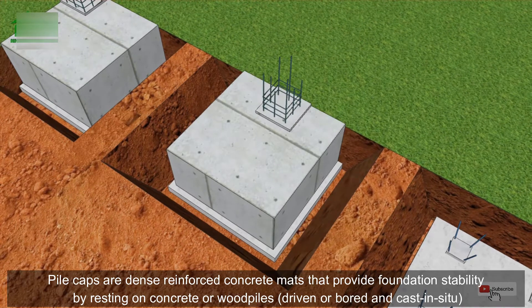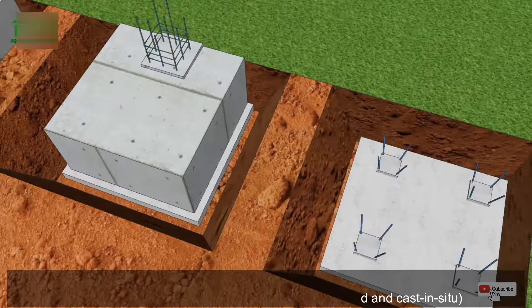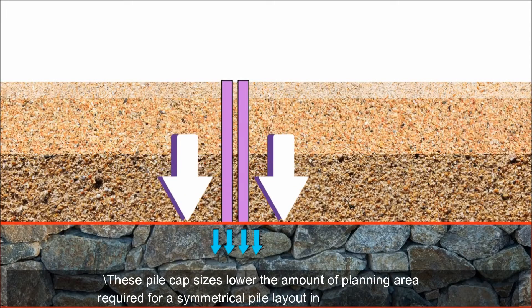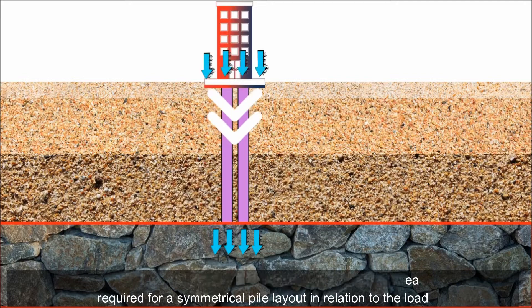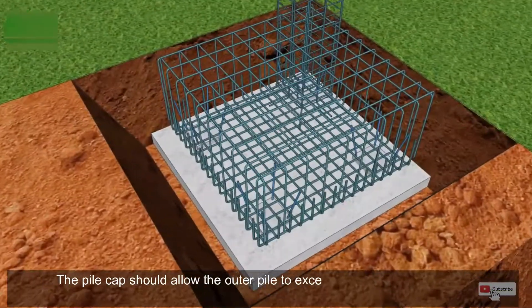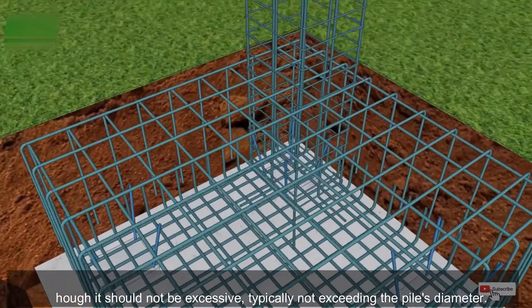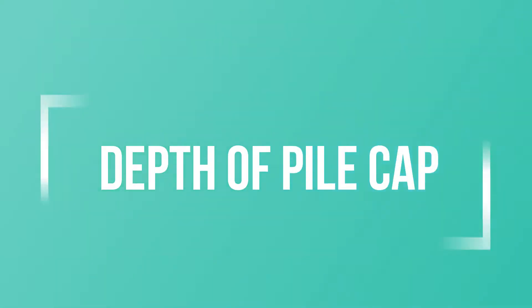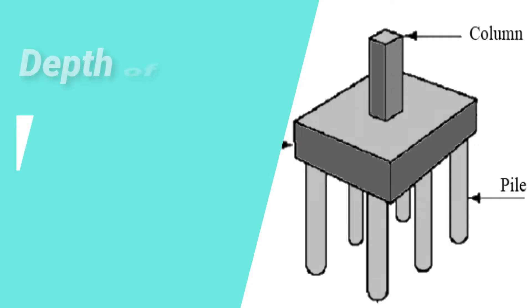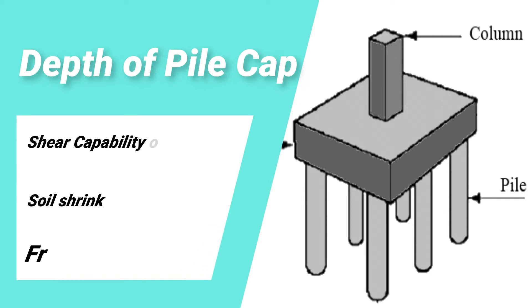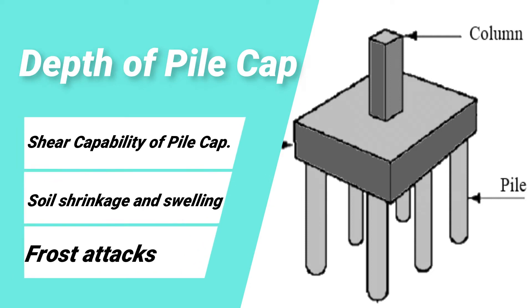Shape and size of pile caps: pile caps are dense reinforced concrete mats that provide foundation stability by resting on concrete or wood piles driven, bored, or cast in situ. These pile cap sizes lower the amount of planning area required for a symmetrical pile layout in relation to the load. The pile cap should allow the outer pile to exceed a minimum of 150 millimeters, although it should not be excessive and typically not exceeding the pile's diameter.